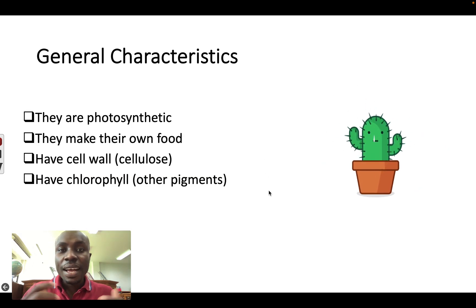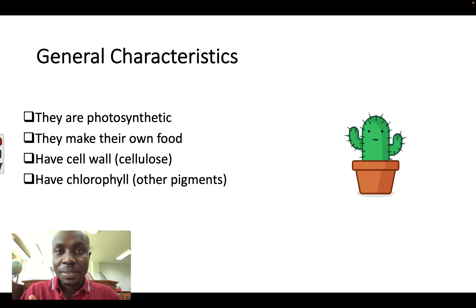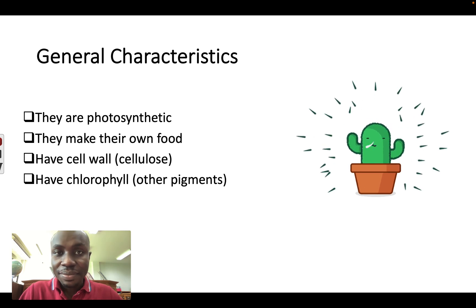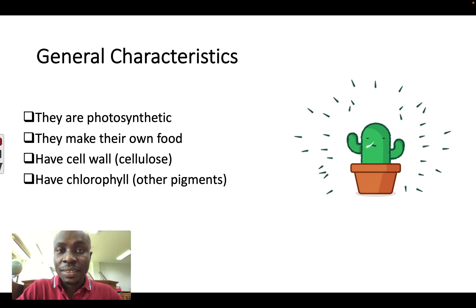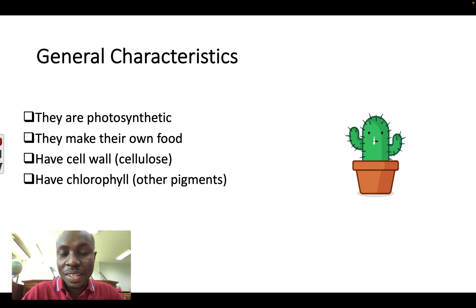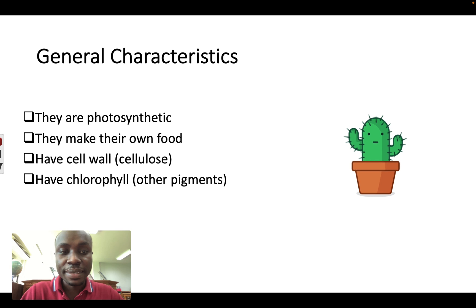What are the characteristics of plants? I'm sure you know some of these already. They are photosynthetic — they can make their own food. They get energy from the sun or light and change it to food. They also have a cell wall which is made of cellulose, and they have chlorophyll and other pigments.